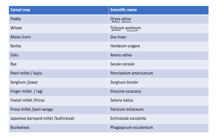Next is maize or corn. The scientific name of maize is Zea mays. Next is barley. The scientific name of barley is Hordeum vulgare. Next is oats — the scientific name is Avena sativa. Next is rye — the scientific name is Secale cereale.